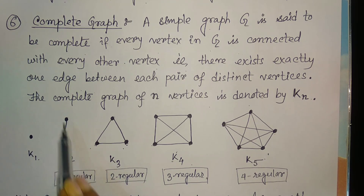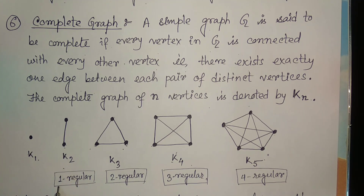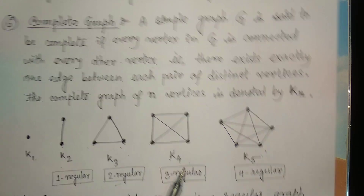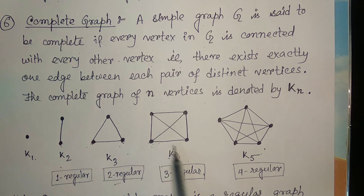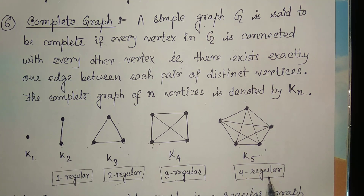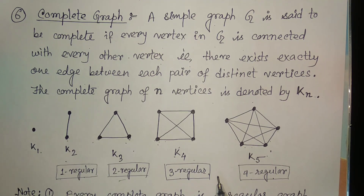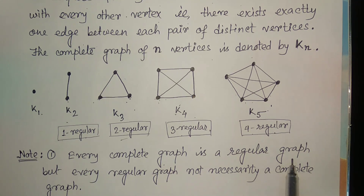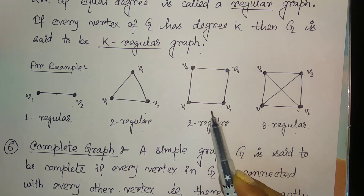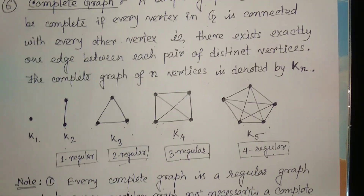One important observation: K2 has two vertices each of degree one — it is one-regular. K3 has all vertices of degree two — two-regular. K4 has all vertices of degree three — three-regular. K5 has all vertices of degree four — four-regular. So we conclude that every complete graph is a regular graph, but every regular graph is not necessarily a complete graph.